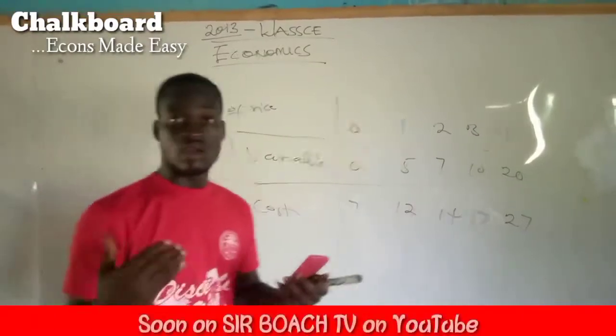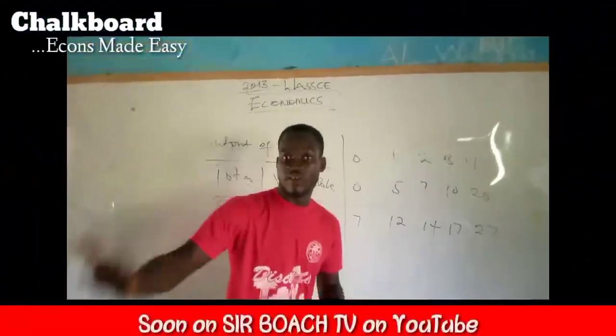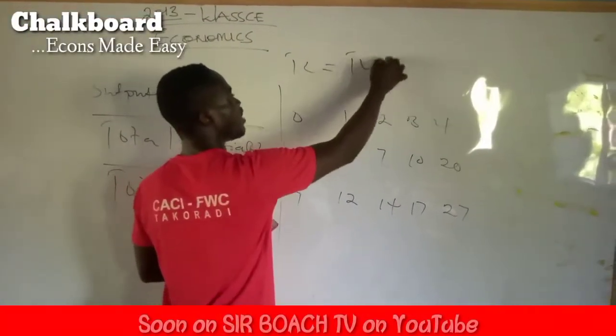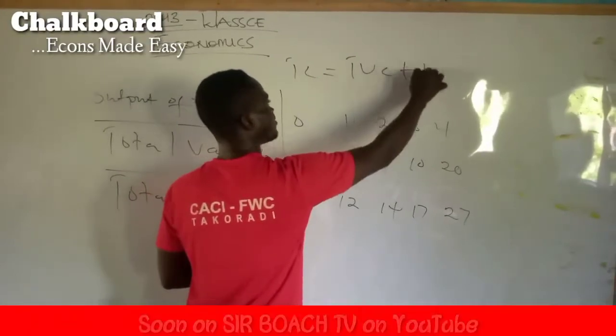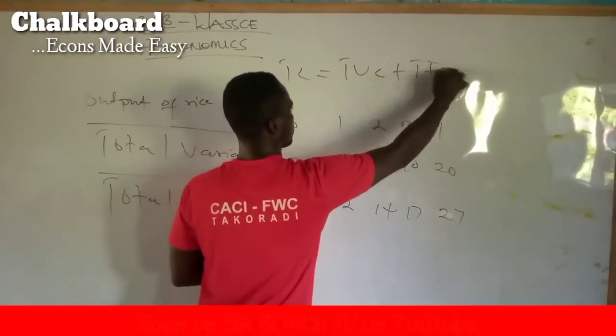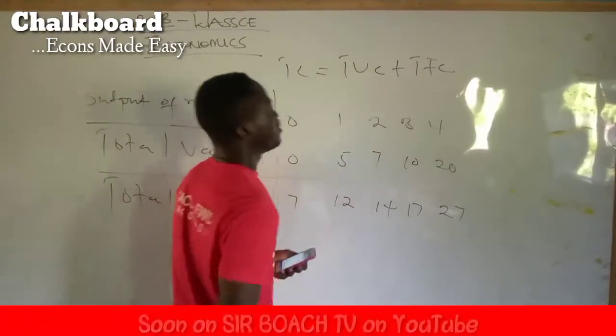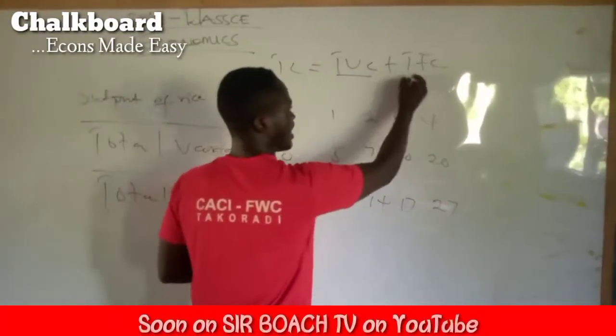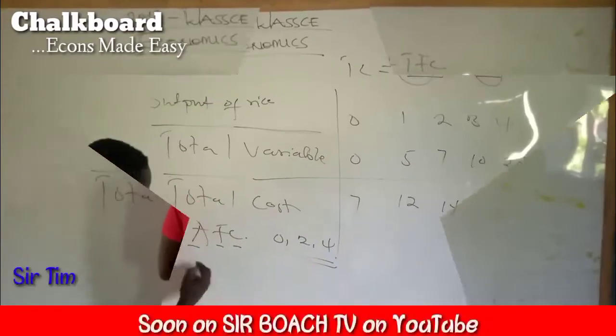Total variable costs are the costs with variance. Total cost is equal to total variable cost plus total fixed cost — so, the variable cost and the fixed cost.